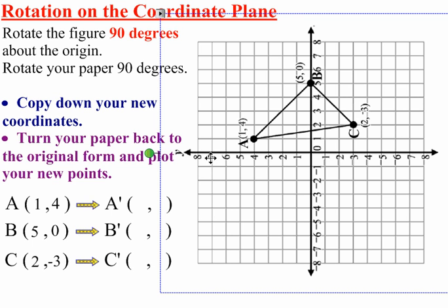But since you're turning your paper 90 degrees counterclockwise, now you have to get the coordinates for A, B, and C. All the coordinates for those points will be your prime points that you can plot once you turn your paper back. So from 0,